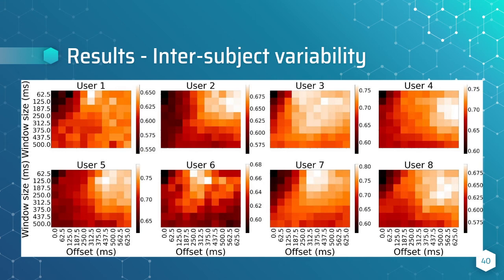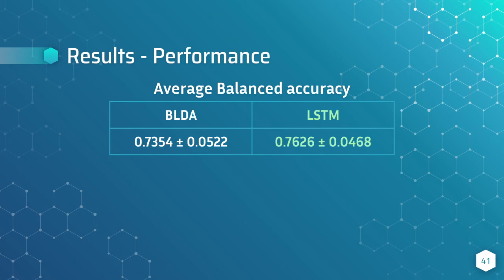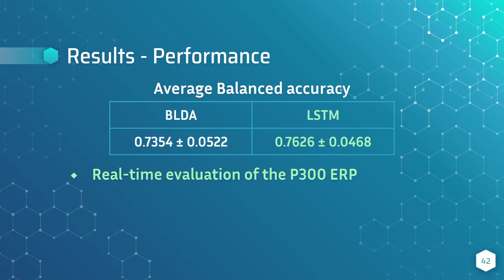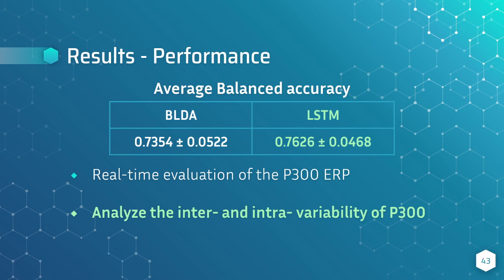And we also understand where the temporal information is in the EEG signals. Our methodology with the LSTM has a better balanced accuracy. The Hoffman model reaches 73% accuracy, while our LSTM reaches 76% accuracy. Even if the performances are similar, our methodology has two significant differences. First, the model now gives a real-time evaluation, sample by sample, when a P300 happens—this approach provides us the precise temporal information we were looking for. Second, our approach brings us the possibility of analyzing both the intra- and inter-variability of P300.